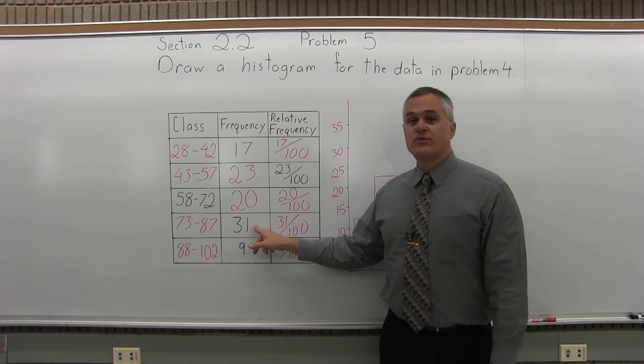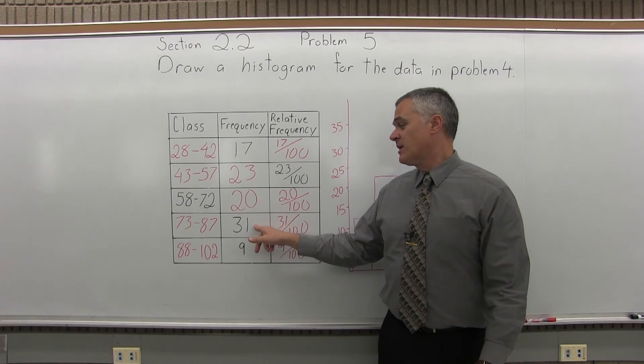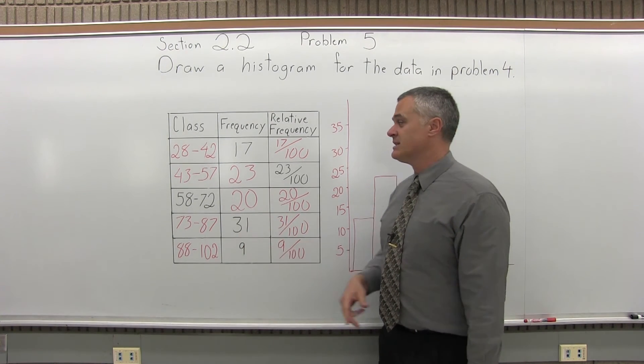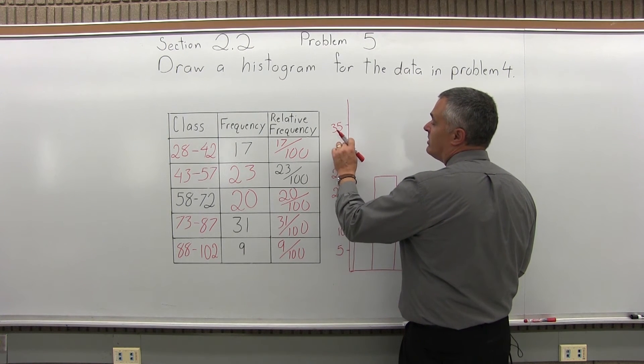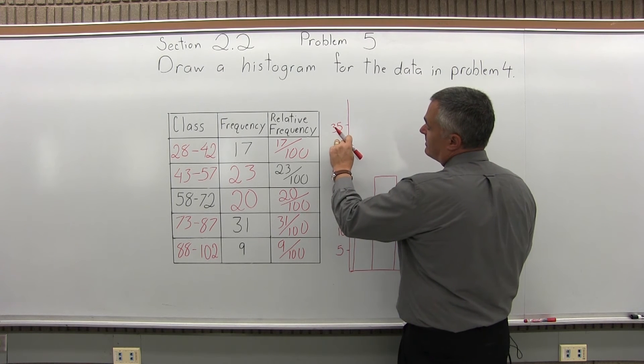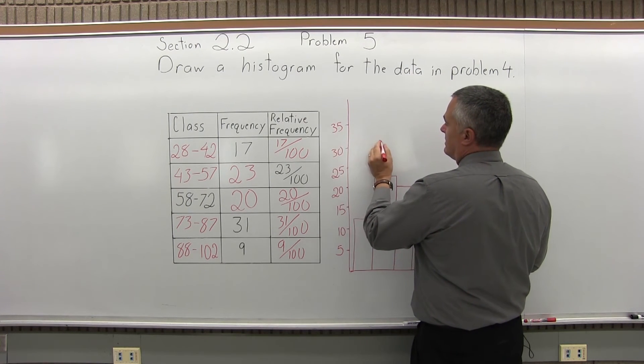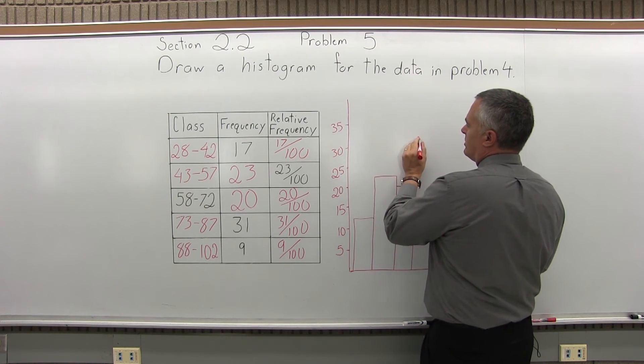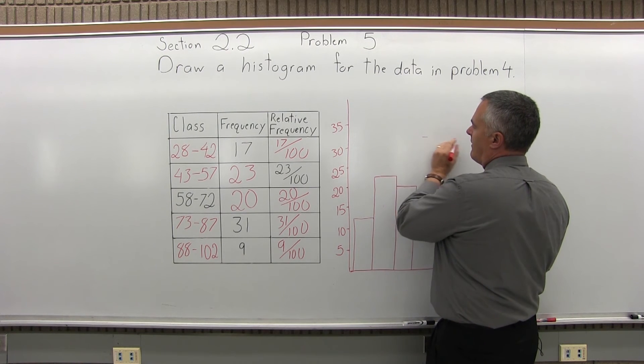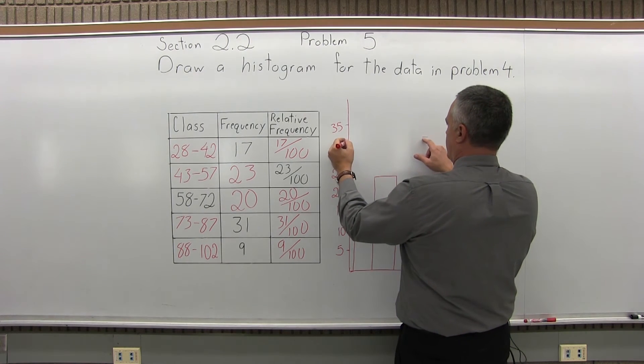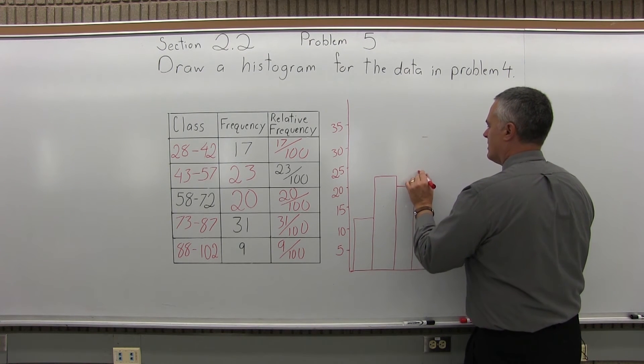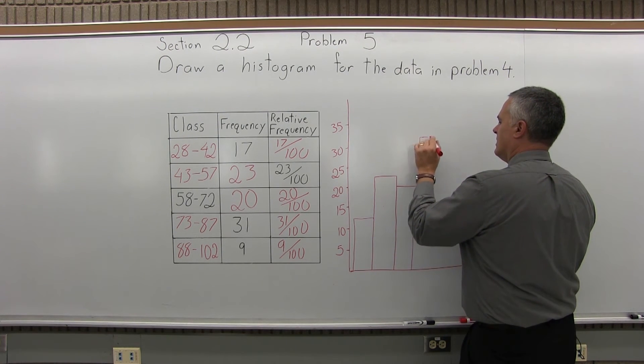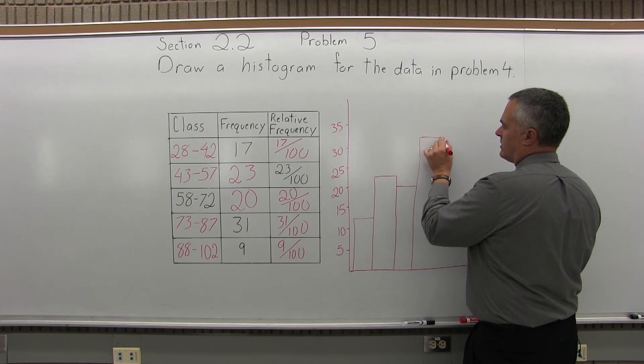Now, the next class has a frequency of 31. So, the next bar will have a height of 31. That's going to be the highest bar. Again, I don't have a 31 exactly. But I have 30. So, I'll go a little past the 31. By I, maybe about here. We're more than a quarter of the way past the 31. Or a little less, rather. So, by I, that looks about right.